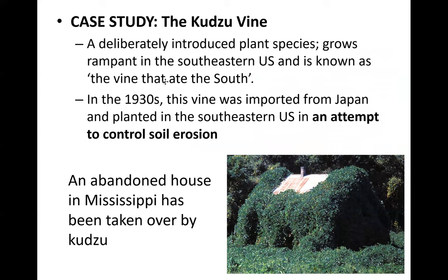Another case study is the kudzu vine, which was deliberately introduced and now grows rampant in the southeast U.S., known as 'the vine that ate the south.' In the 1930s, this vine was imported from Japan and planted in the southeastern U.S. in an attempt to control soil erosion. But it grew rampantly — here is a photo of an abandoned house in Mississippi almost completely taken over by kudzu.